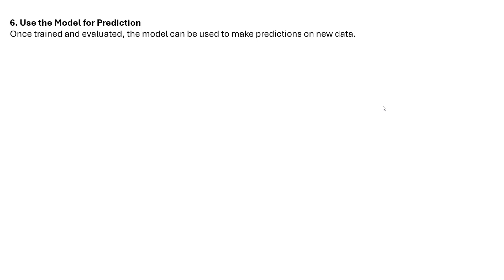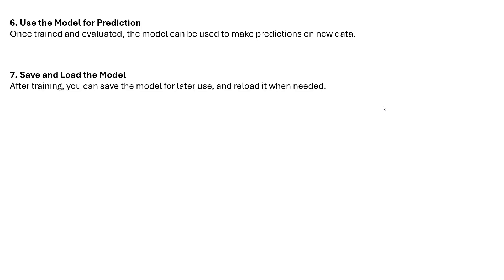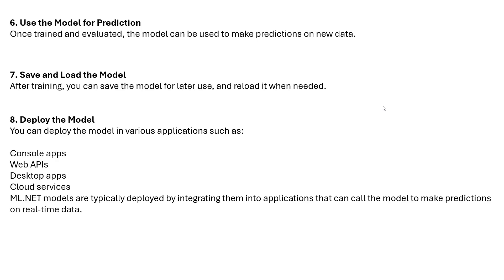Step six is using the model for predictions on new data. Step seven is saving and loading the model — after training you can save it for later use and reload it when needed. Finally, you can deploy the model in various applications like console apps, web apps, desktop apps, and cloud apps. This concludes the getting started with machine learning chapter; the next video will cover designing a machine learning algorithm-based program.